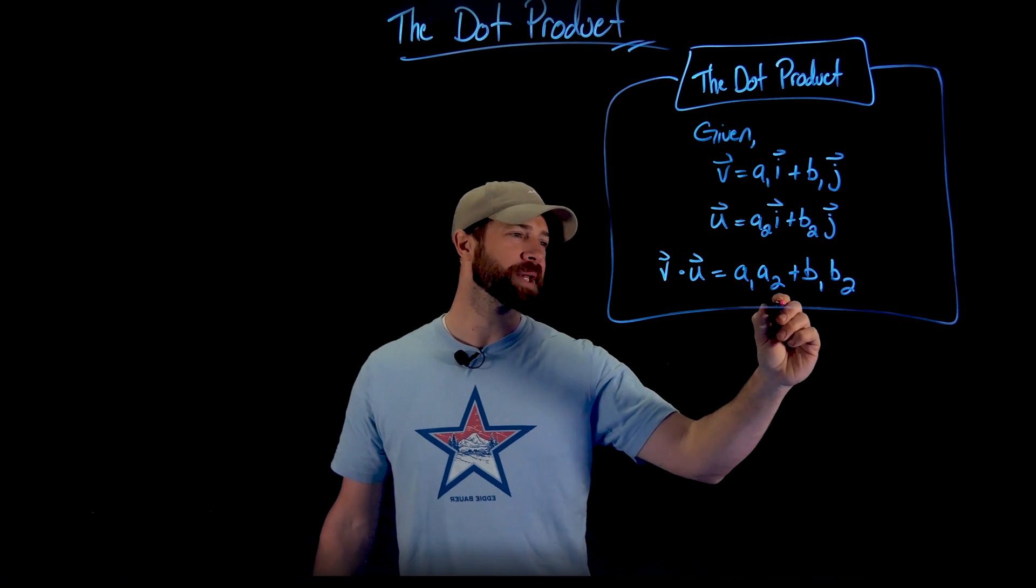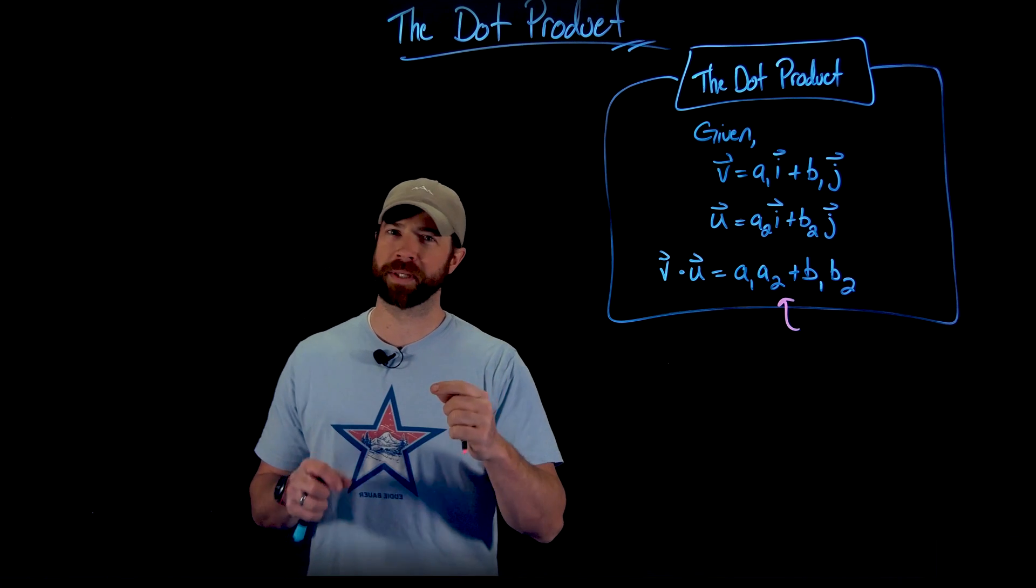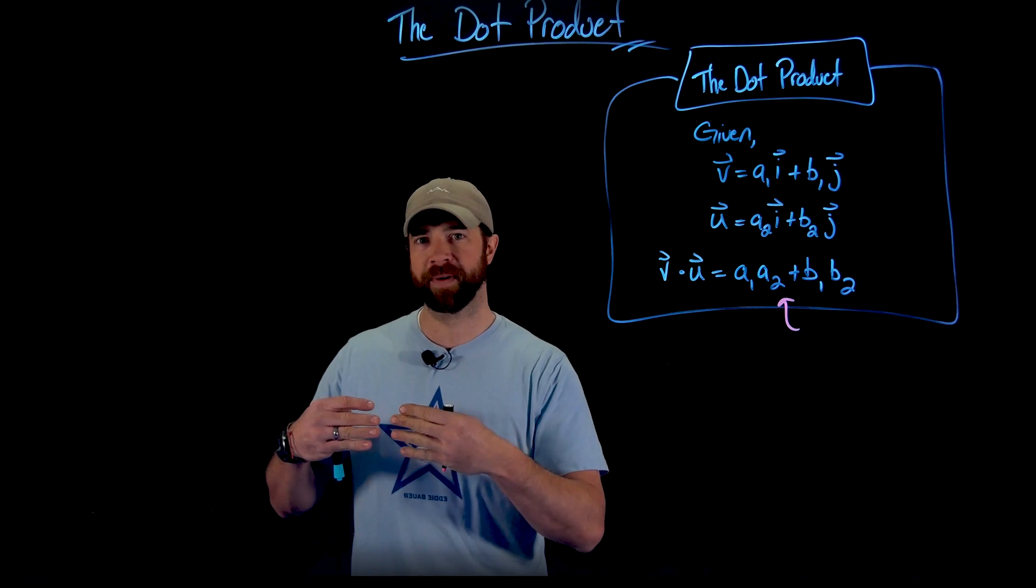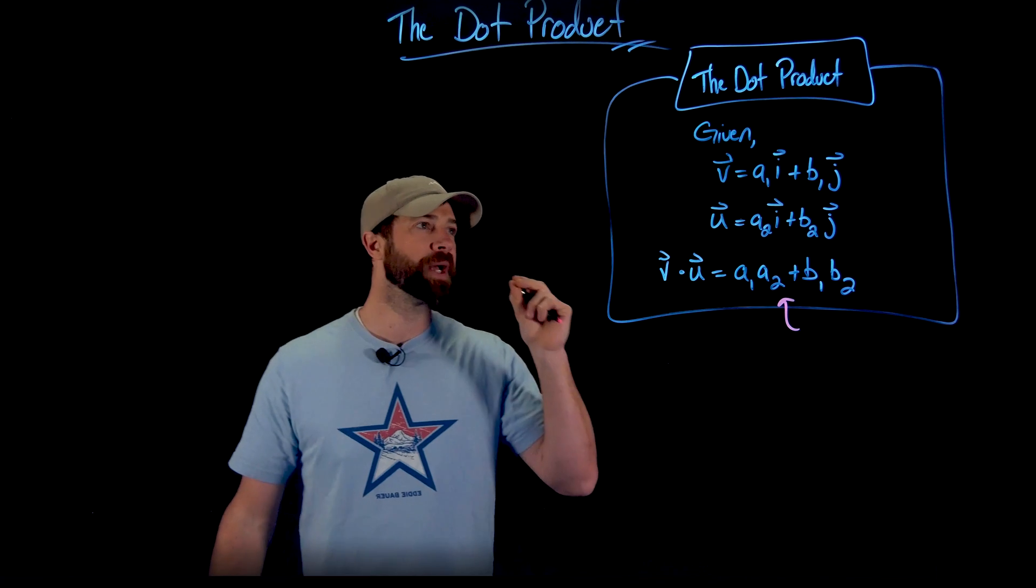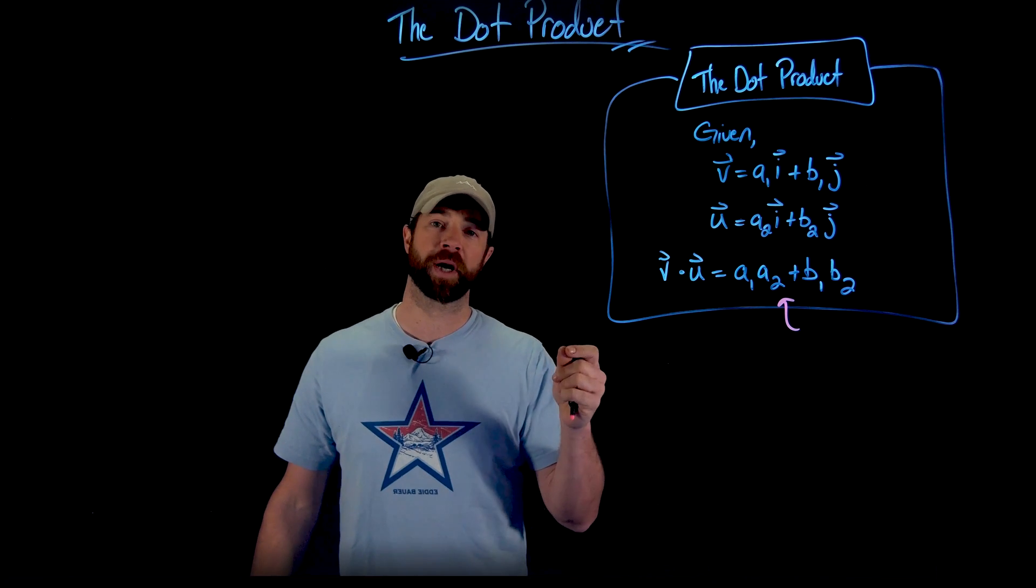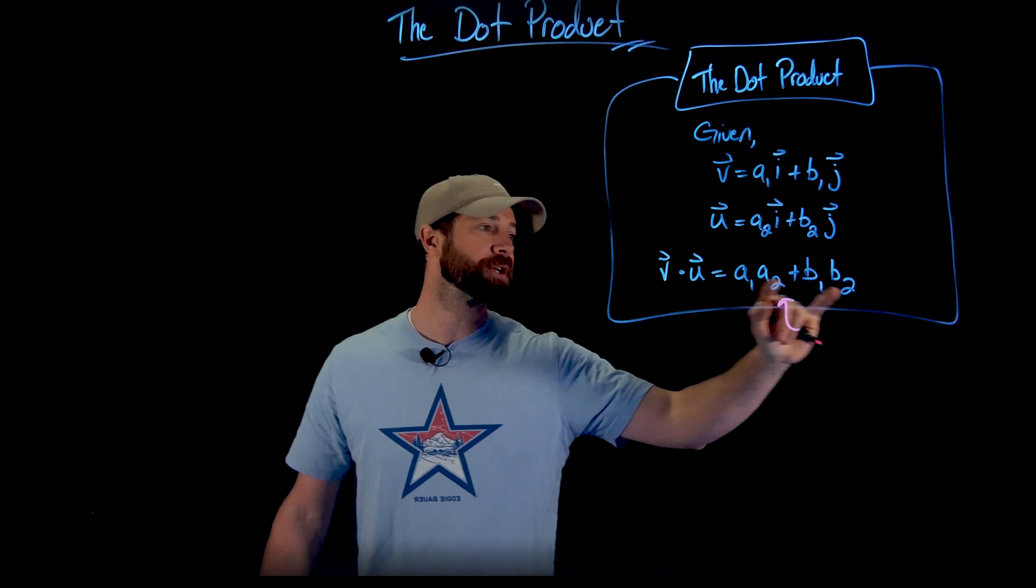Importantly, when we do this, the result is not another vector. That's important to say, because when we add and subtract vectors, the result is another vector. This method of dot product is not a vector. It results in a number.